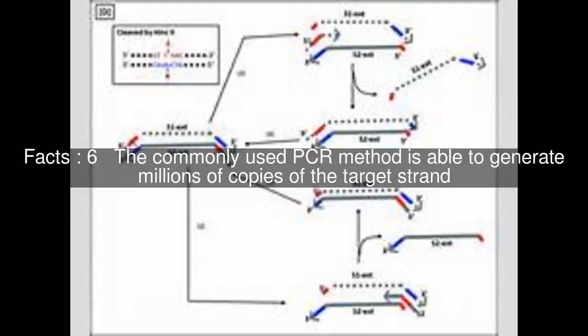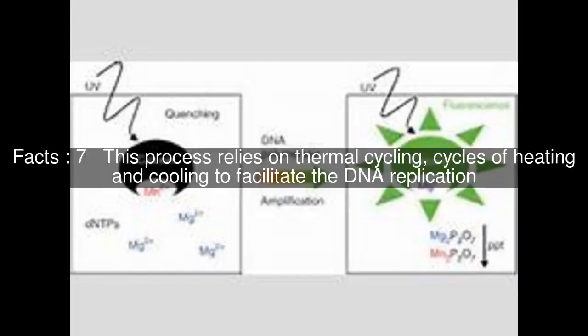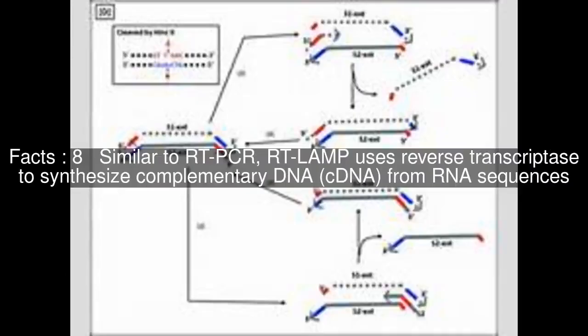The commonly used PCR method is able to generate millions of copies of the target strand. This process relies on thermal cycling — cycles of heating and cooling — to facilitate DNA replication. Similar to RT-PCR, RT-LAMP uses reverse transcriptase to synthesize complementary DNA, cDNA, from RNA sequences.